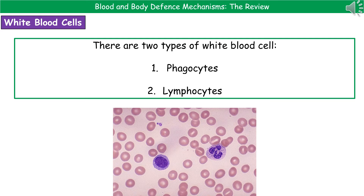Obviously, those defences to keep microorganisms out of the body aren't always successful. So even if that initial defence mechanism fails, we do still have our white blood cells. We've got two types of white blood cells that we need to remember the names of: phagocytes and lymphocytes.